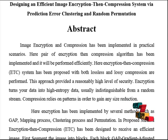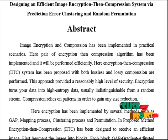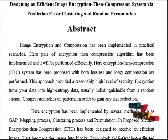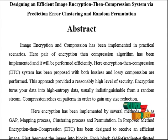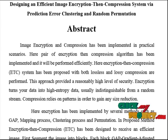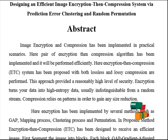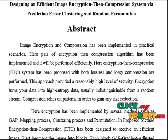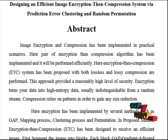Image encryption and compression has been implemented in practical scenarios. Here a pair of encryption-then-compression algorithms has been implemented and performed efficiently. The encryption-then-compression system is proposed with both lossless and lossy compression performed, providing a reasonably high level of security. Encryption turns data into high entropy data usually indistinguishable from a random system, while compression relies on patterns in order to gain any size reduction.